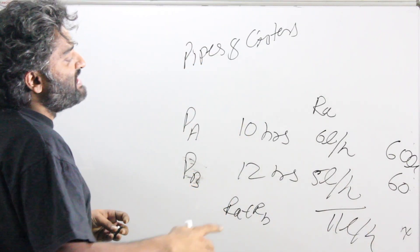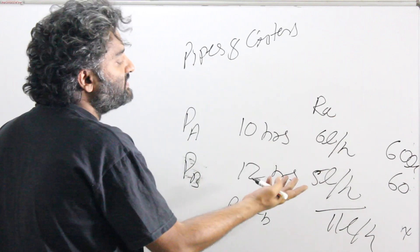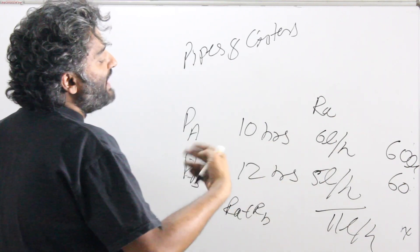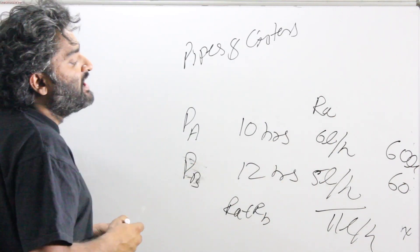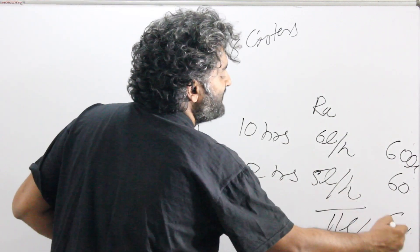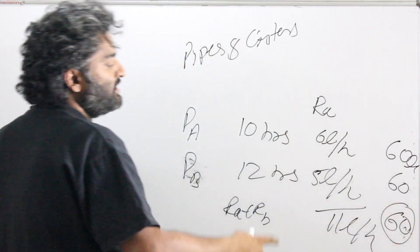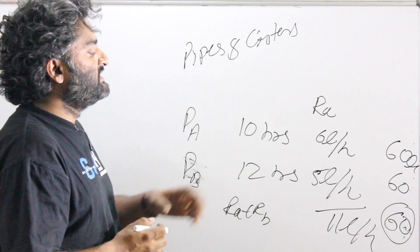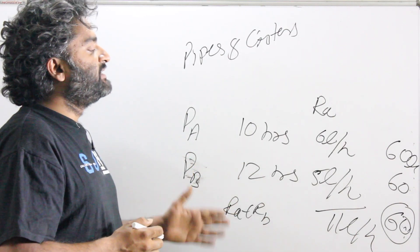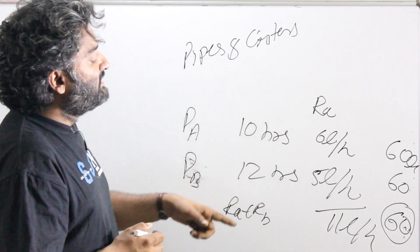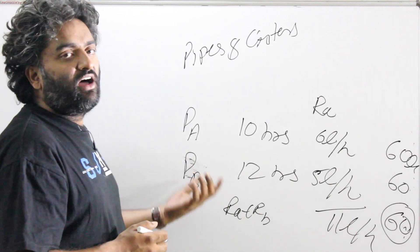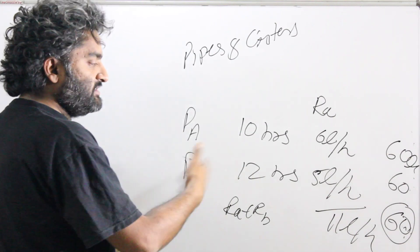If I put them together, rate of A plus rate of B, it would be 11 liters per hour. Think of it as two taps being opened simultaneously. One is giving you 6 liters per hour. The other is giving you 5 liters per hour. Overall, per hour, you would be getting 11 liters. And you have to fill 60 liters. Divide the liter by liter per hour and you will get the hour value.